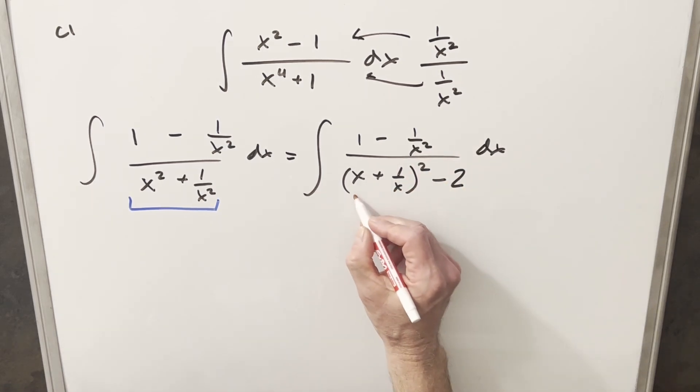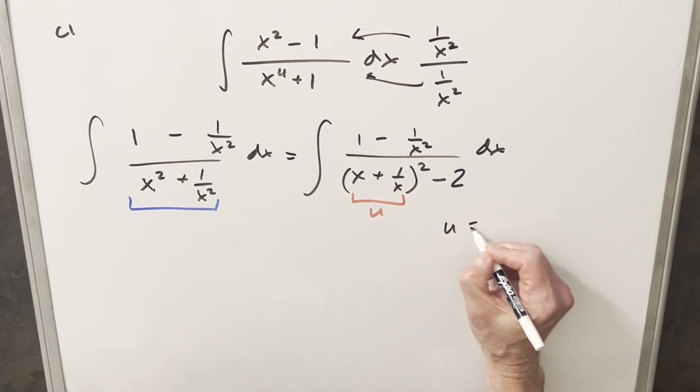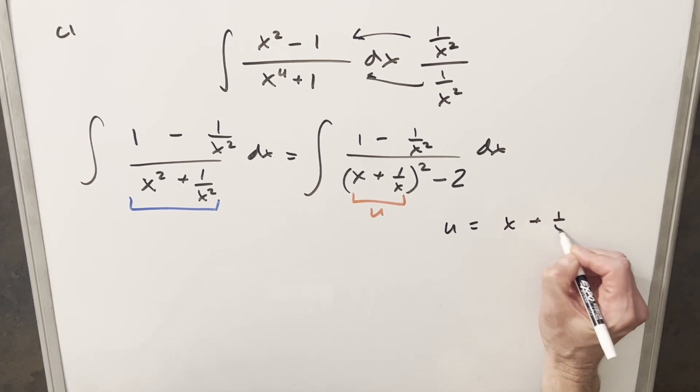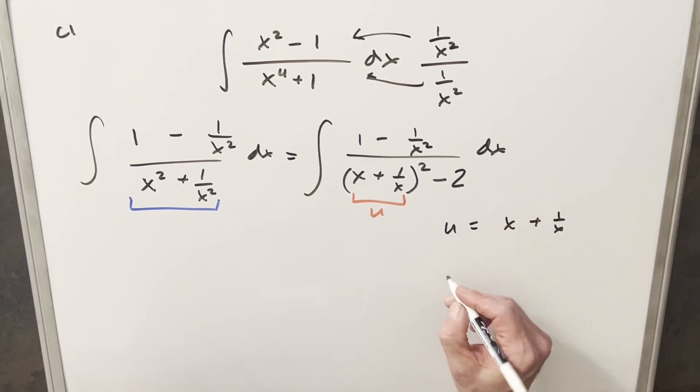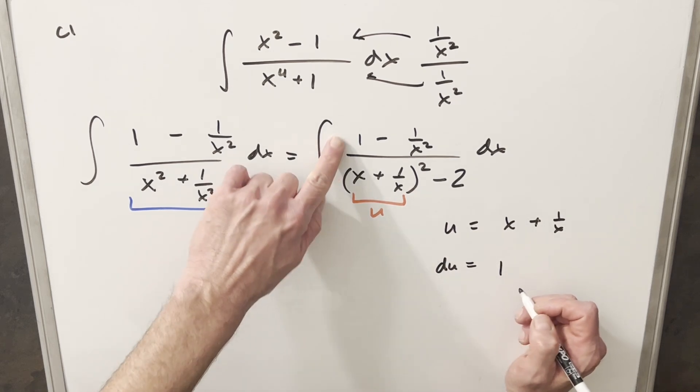But now I'm just going to go ahead and we're going to do a u substitution. So I'm going to call this right here my u. So we'll say u is equal to x plus 1 over x. Take a derivative here, du. Derivative of x is 1. Nice.